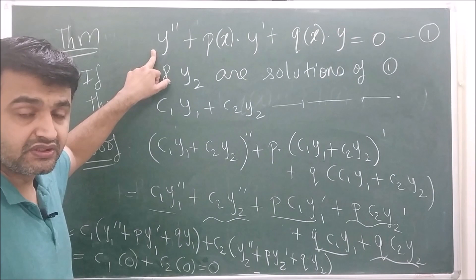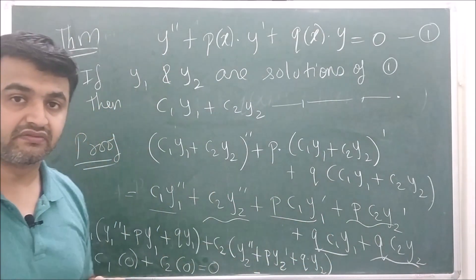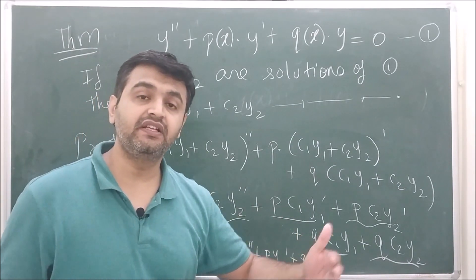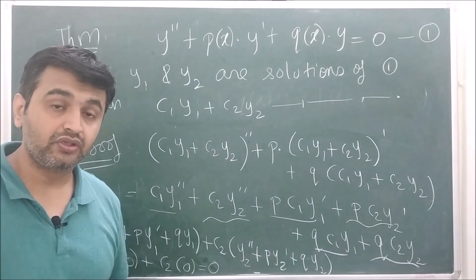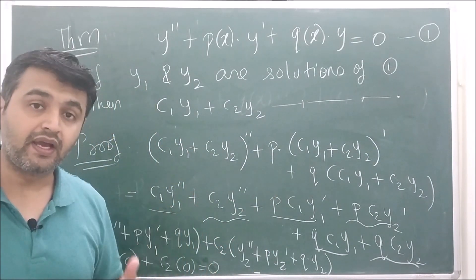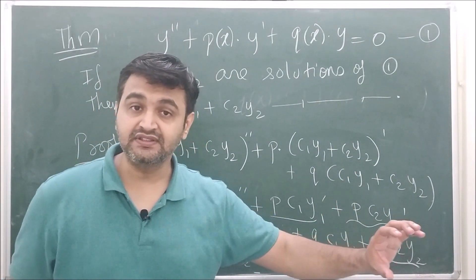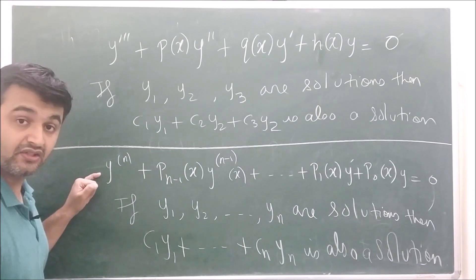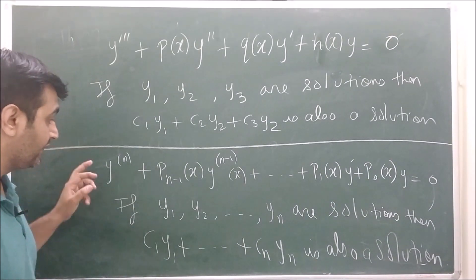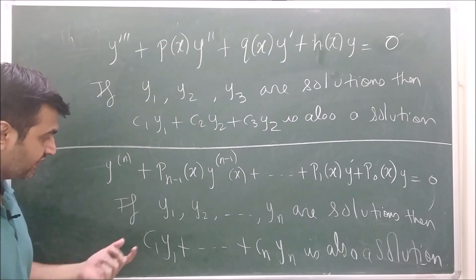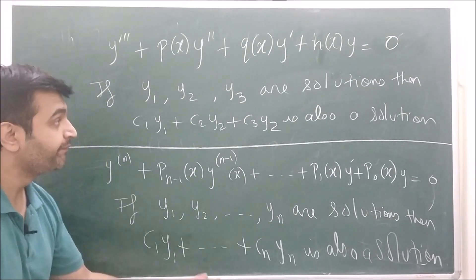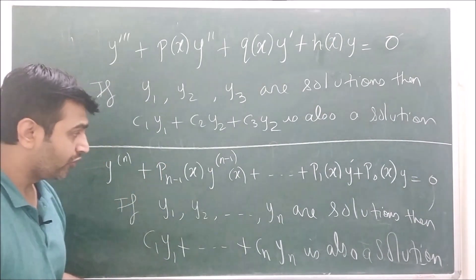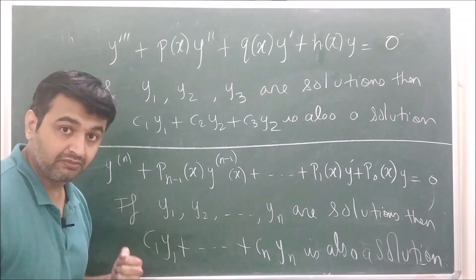There is nothing special about second order here. For a third order linear homogeneous equation with solutions y1, y2, y3, the combination c1·y1 + c2·y2 + c3·y3 is also a solution. In general, for an nth order linear homogeneous differential equation with solutions y1, y2, ..., yn, any linear combination of these n solutions is also a solution. You can try proving this for third order first, then generalize to nth order.